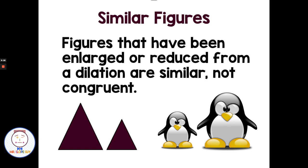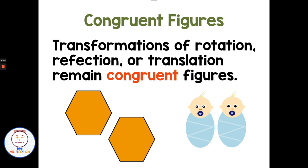Remember, figures that have been enlarged or reduced from a dilation are similar but not congruent — meaning they're the same shape but no longer the same size. If you've had a dilation, you still have similar figures with the same shape, but they're not congruent because they're different sizes. Congruent means same in size and shape. With rotations, reflections, or translations, figures remain congruent — same size and same shape. It's dilations that make figures no longer congruent because they're bigger or smaller, even though they're the same shape.